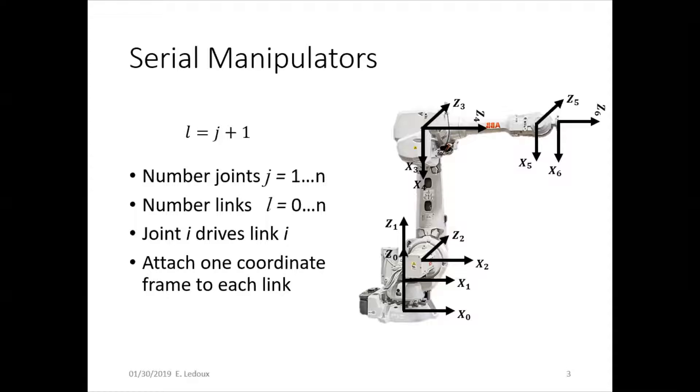Then you attach one coordinate frame to each link, usually on its joint. You can see here joint one is the vertical joint. Then joint two moves this arm. Joint three makes this arm rotate. Joint four spins longitudinally.